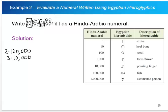Two lotus flowers, so that would be two thousands. Four scrolls, so that would be four hundreds.